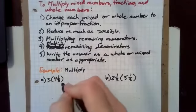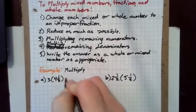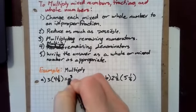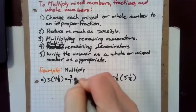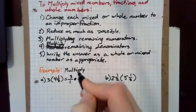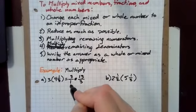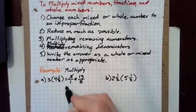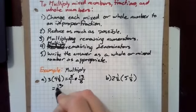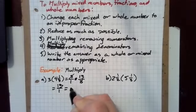So here we have three times four and a third. I will first rewrite three as three over one, and four and a third, that's 13 thirds. So I have three over one times 13 over three. I can cancel those threes. I'm left with 13 over one, which is just 13.